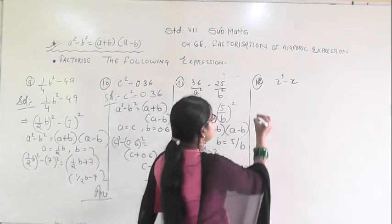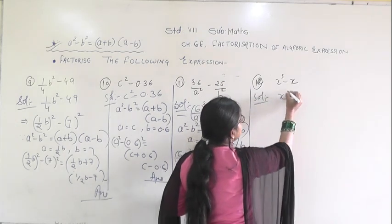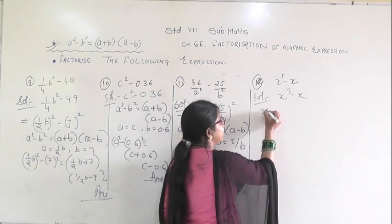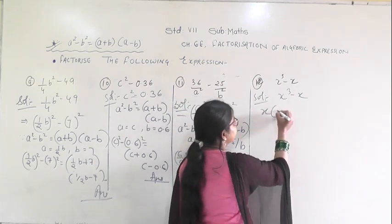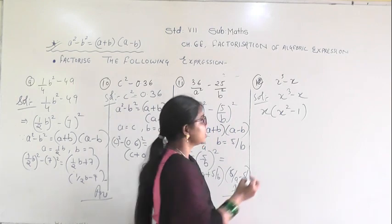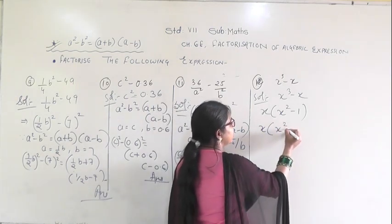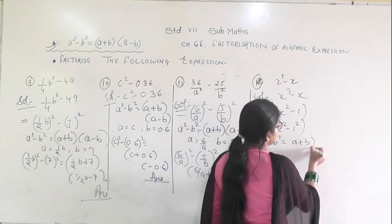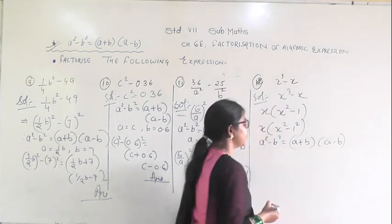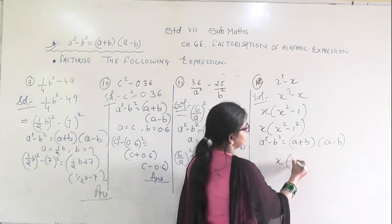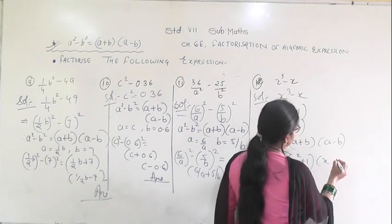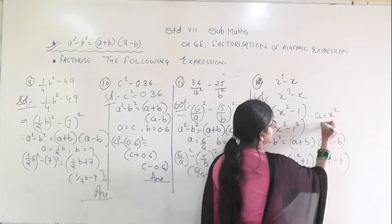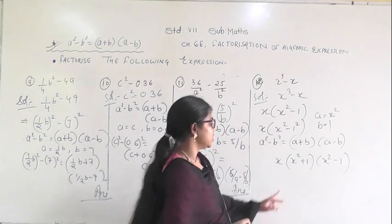In the 12th question, you are given x cubed minus x. To convert this into the form of a squared minus b squared, take out x common to get x(x squared minus 1). I can write x squared minus 1 as x squared minus 1 squared. Applying the formula, with a equal to x and b equal to 1, you get x(x plus 1)(x minus 1). This is the answer.